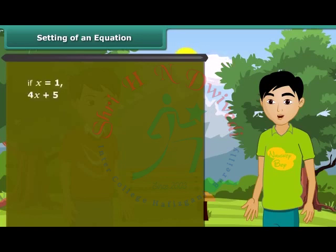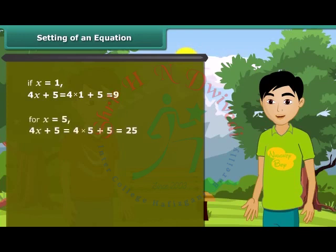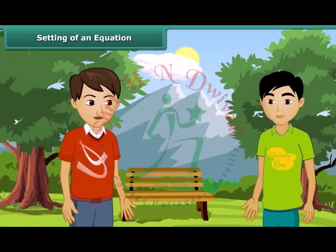If x is 1, we get the answer as 9. If x is 5, we get answer as 25. Similarly, for x is equal to 15, we get the answer 65. This is so simple.